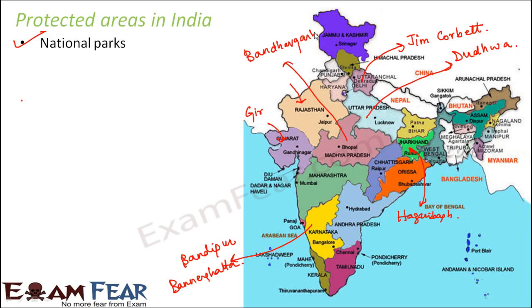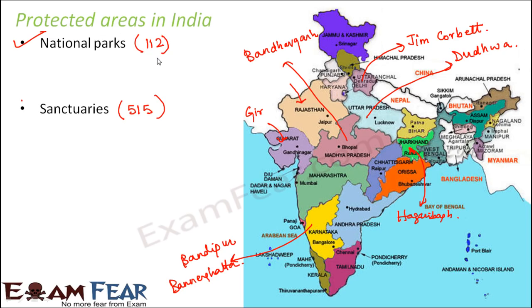Now let's look at animal sanctuaries. There are approximately 515 animal sanctuaries in India. As per a record of 2012, there are 112 national parks in India.